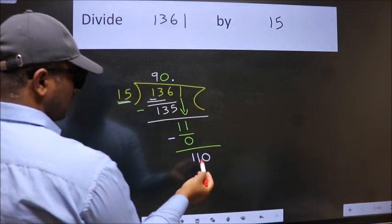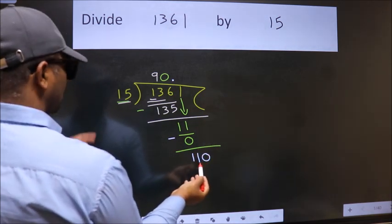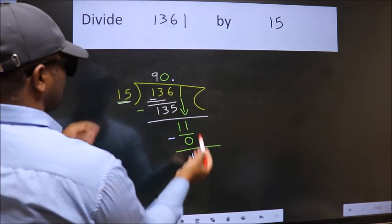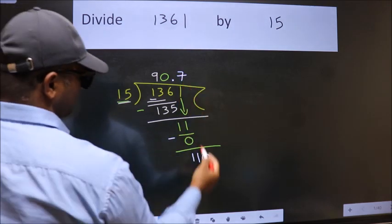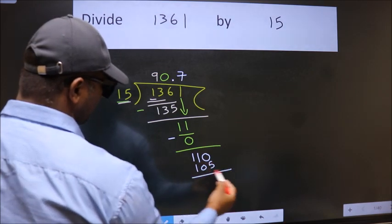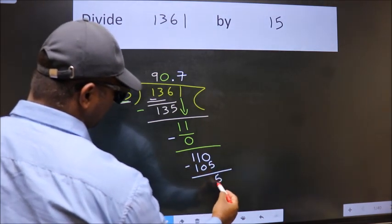So 110. A number close to 110 in 15 table is 15 sevenths, 105. Now we subtract, we get 5.